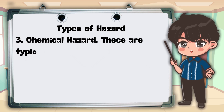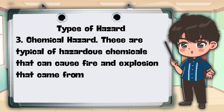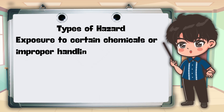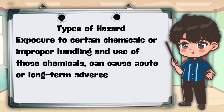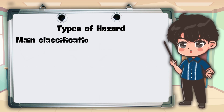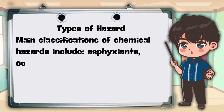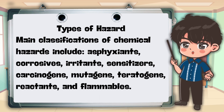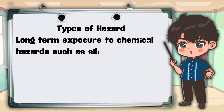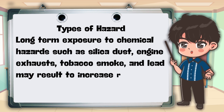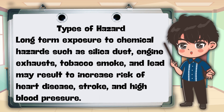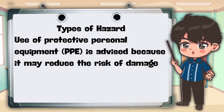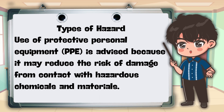3. Chemical hazard — These are typical hazardous chemicals that can cause fire and explosion, coming from pesticides, cleaning agents, acids, and poisons. Exposure to or improper handling of those chemicals can cause acute or long-term adverse health effects. Main classifications include asphyxiants, corrosives, irritants, sensitizers, carcinogens, mutagens, teratogens, reactants, and flammables. Long-term exposure to chemical hazards such as silica dust, engine exhausts, tobacco smoke, and lead may result in increased risk of heart disease, stroke, and high blood pressure. Use of personal protective equipment (PPE) is advised to reduce the risk of damage from contact with hazardous chemicals and materials.